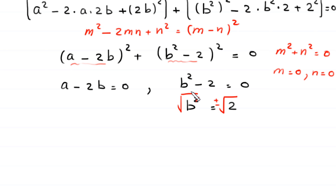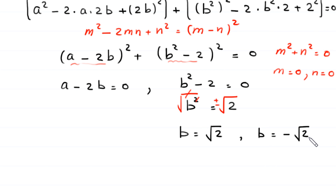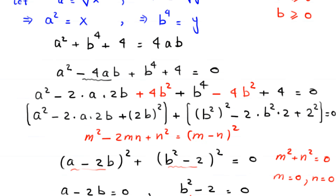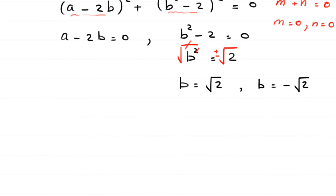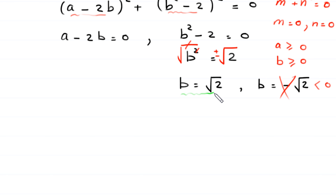Since b must be greater than or equal to 0, the value negative square root of 2 is less than 0 and is rejected. We accept only b equals square root of 2.